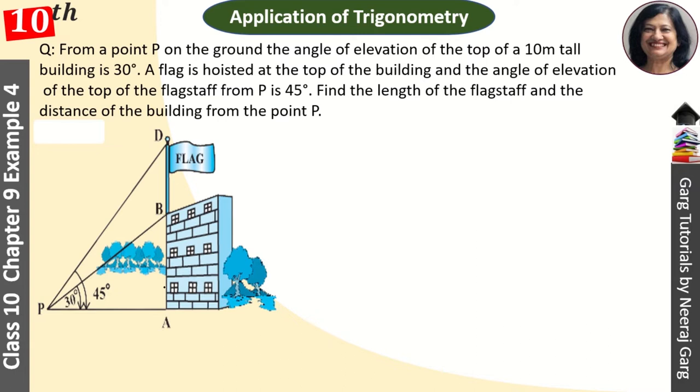So this is AB building. AB building's height is 10 meter, so AB is 10 meter. This is 10 meter, right? AP we have to find, it is X.